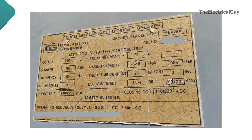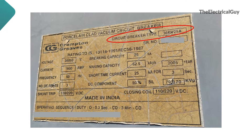This is a nameplate of 36 kV VCB. First is circuit breaker type — few manufacturers also call this as a designation. This simply represents what the manufacturer calls the product; it is the name given by the manufacturer to the product.